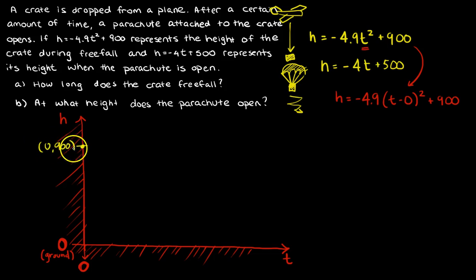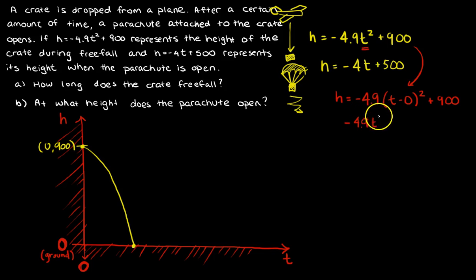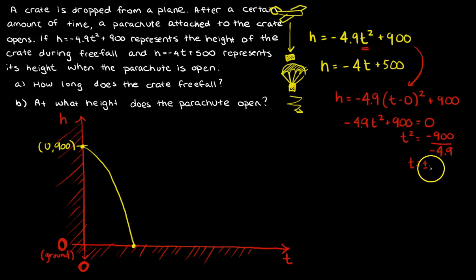I have a negative 'a', so this parabola opens downward — it's going to go down and hit the ground. Where does it hit? Those are the roots. Setting height to 0: −4.9T² + 900 = 0. I move the 900 over and divide by −4.9 — the negatives cancel — and I get T² = 900/4.9, so T = ±√(900/4.9), which is roughly ±13.8.